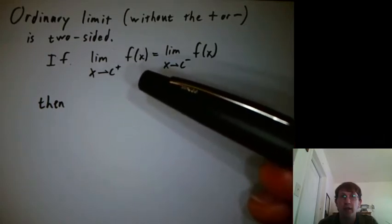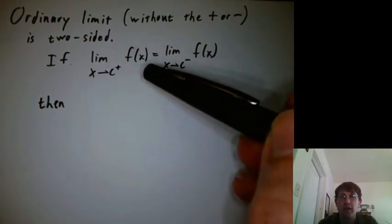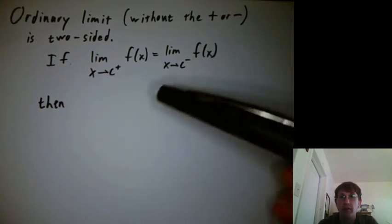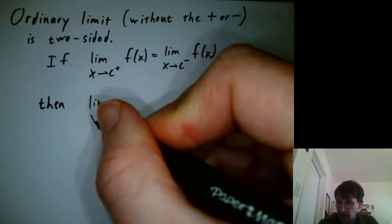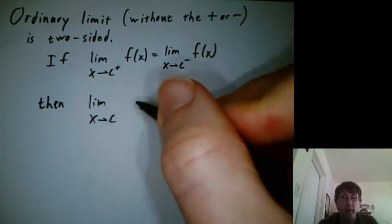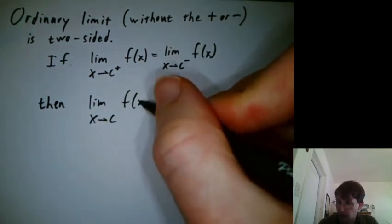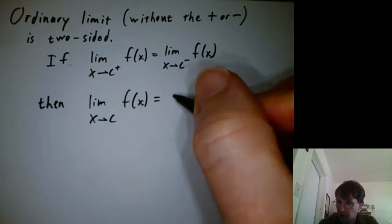So what can we say if the limit from the right equals the limit from the left? What can we decide then? Then we can decide the limit as x goes to c without a plus or minus, f of x, exists.